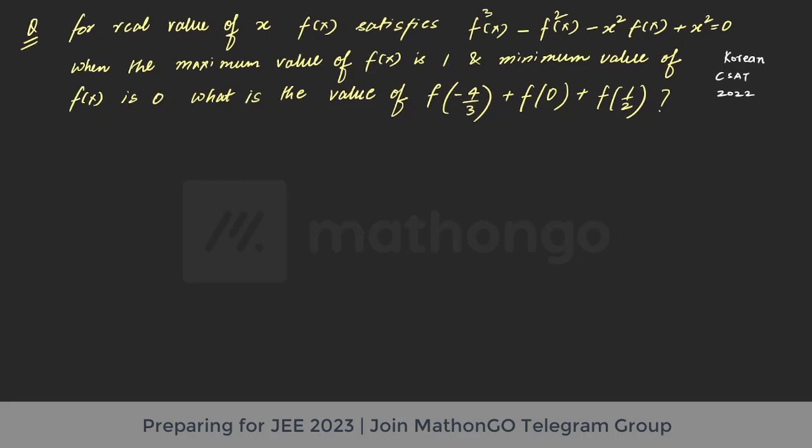So it says for real value of x, fx satisfies a cubic equation in terms of fx. When the maximum value of fx is 1 and minimum value of fx is 0, what is the value of f(-4/3) + f(0) + f(1/2)?